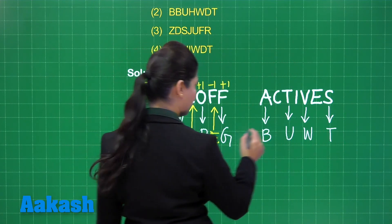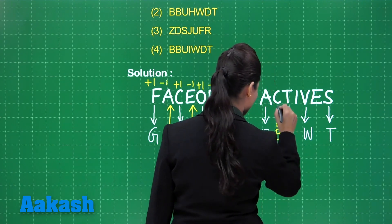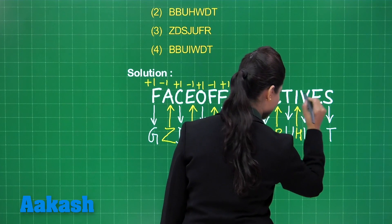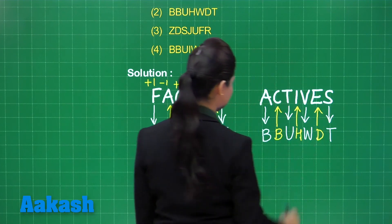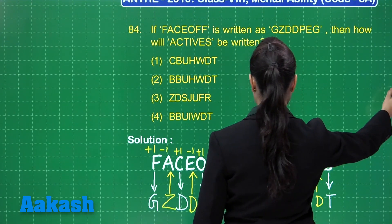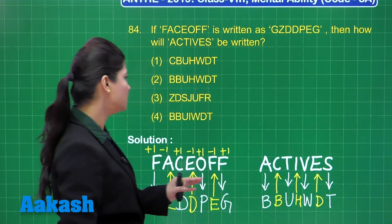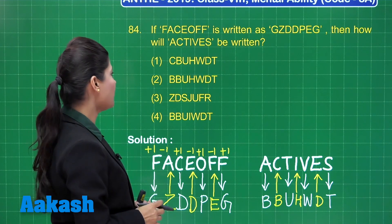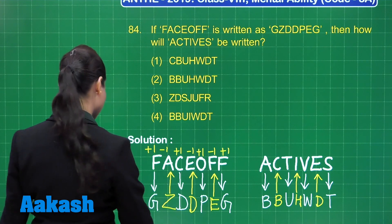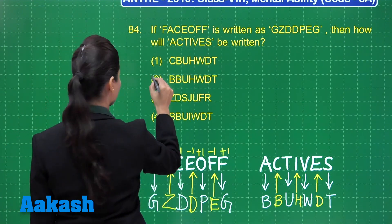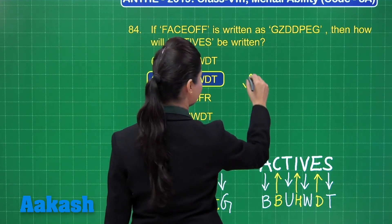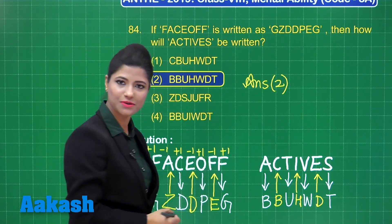You can observe the code obtained here is BBUHWDT. BBUHWDT is clearly found in option number 2. So the correct answer for this coding-decoding question is option number 2. You can mark your answer as option 2.